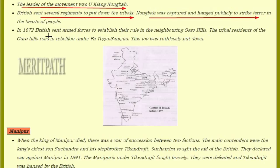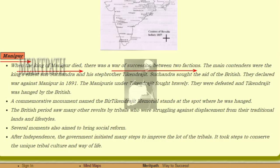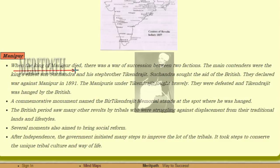In 1872, the British sent armed forces to establish their rule in the neighboring Garo hills. The tribal residents of the Garo hills rose in rebellion under Patwa Sangma, but this was also ruthlessly put down. Here you can see on the India map where the revolts before 1857 occurred.